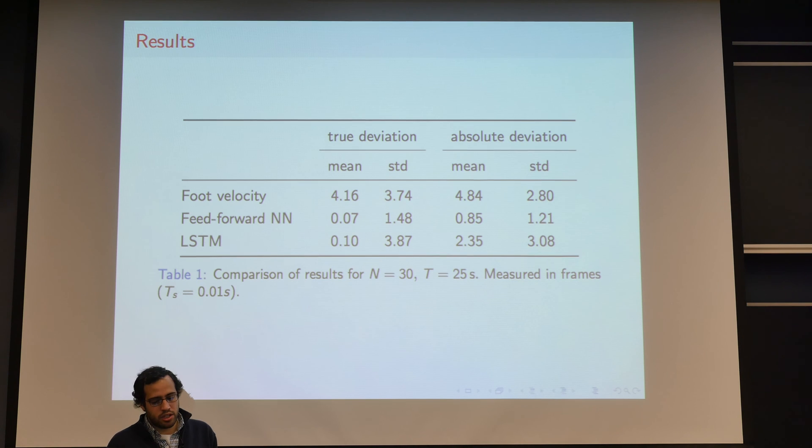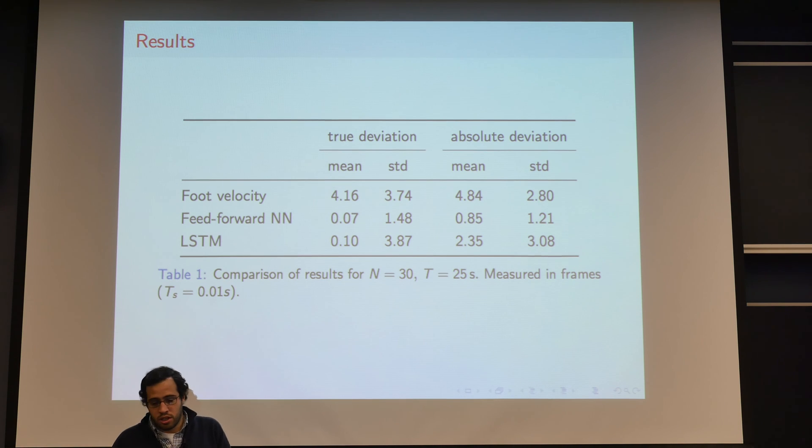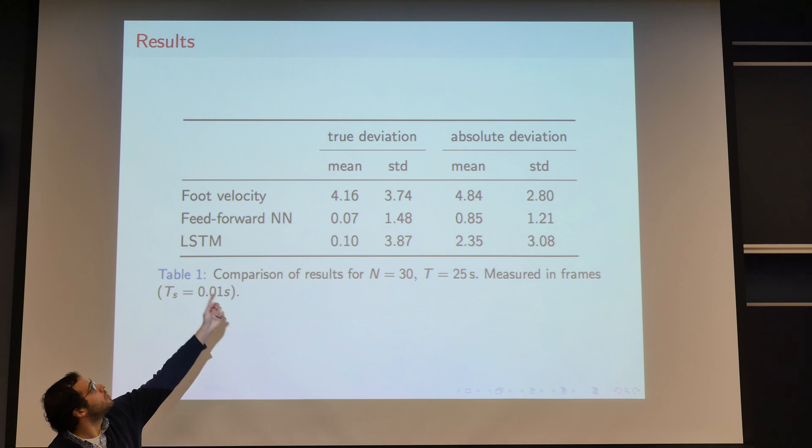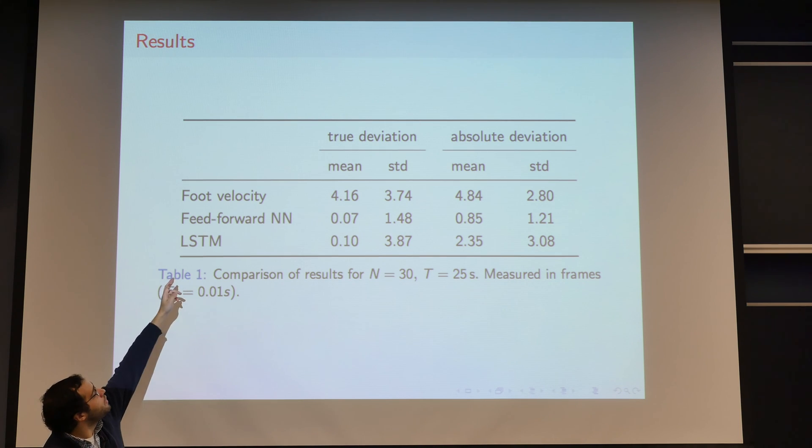So what I'm presenting here, we trained and tested both with 30 trials of 25 seconds each. The results I'm presenting here are for the first row, we have a heuristic based on the foot velocity from the markers, which does not do very well. The true deviation is just the distance between the actual events and the events that were detected. The absolute deviation is the absolute value of those, the statistics on that.